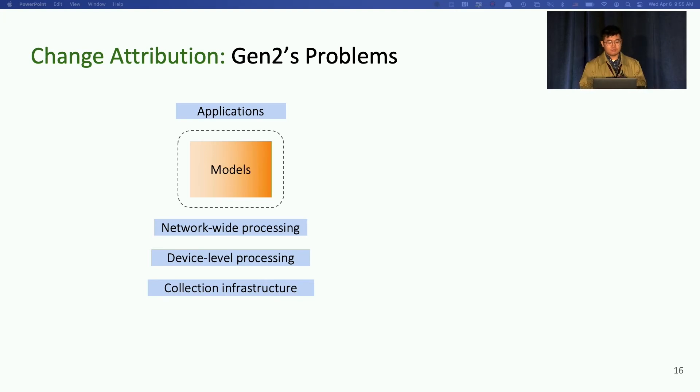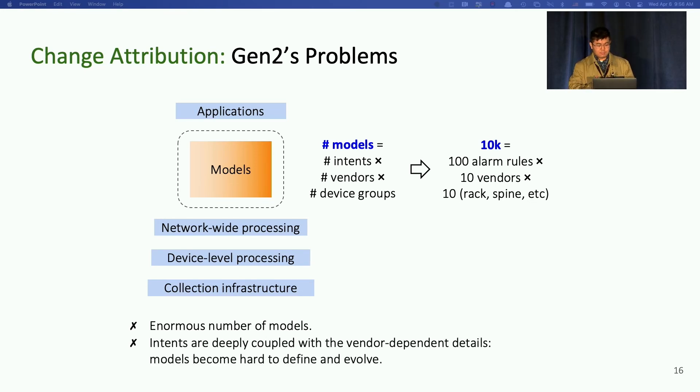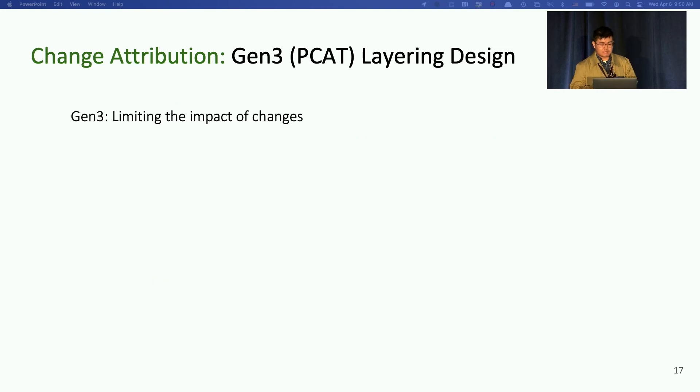But this kind of decoupling is still not good enough. If we look at the model components in Gen 2, they are actually an enormous number of models. The total number is roughly equals to the number of intents, for example, 100 alarm rules on different counters times the number of vendors, for example, 10 vendors, times the number of device groups, rack switches, spine switches. So for each of these combinations in Gen 2, we need to write a separate model to describe vendor-specific data for a specific group of devices. In this example, the number of models could be as high as 10K. Also, this deep coupling of intents and various vendor-dependent detail in the model layer really makes the model hard to define and evolve.